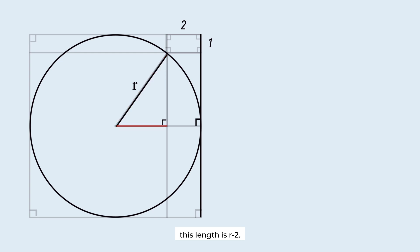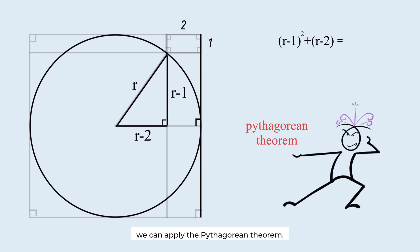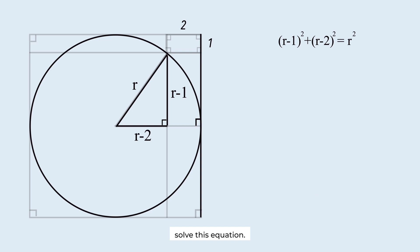This length is r, this length is r minus 2, and this length is r minus 1. We can apply the Pythagorean theorem. Solve this equation.